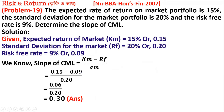The expected rate of return on the market portfolio is 10 percent. The standard deviation for the market portfolio is 10 percent, and the risk-free rate is 9 percent. Determine the slope of the CML — Capital Market Line.